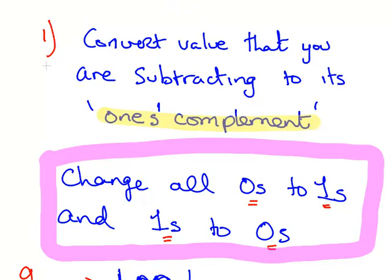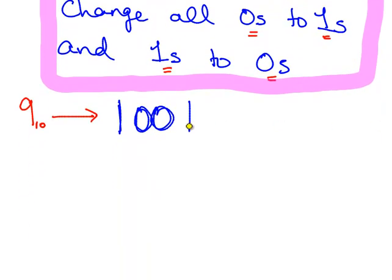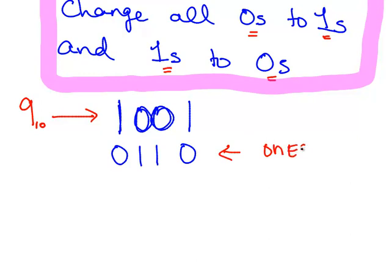Now we'll come to the 2's complement shortly. So here we have 9 in decimal, which is 1, 0, 0, 1 in binary. And so 0, 1, 1, 0 is the 1's complement. We convert 1's to 0's and 0's to 1's — that gives us our 1's complement.